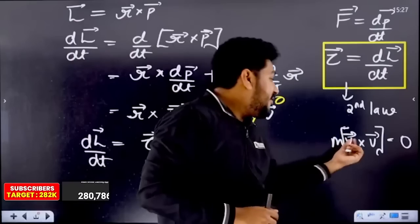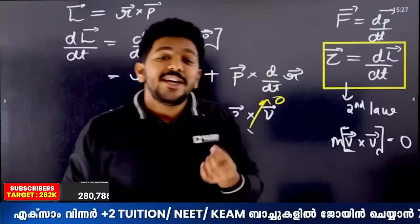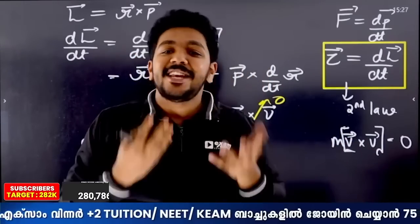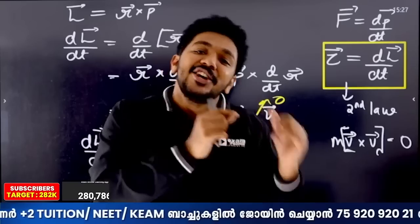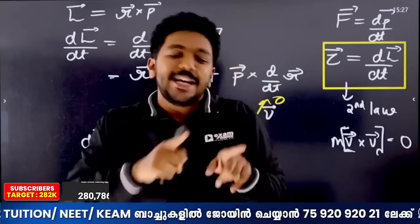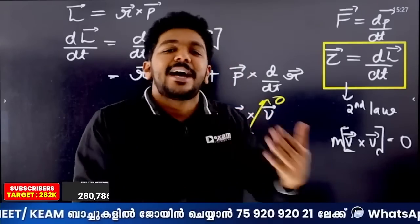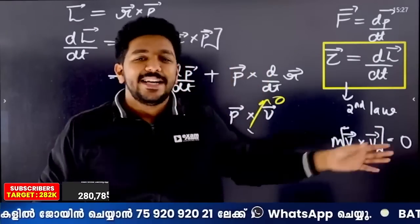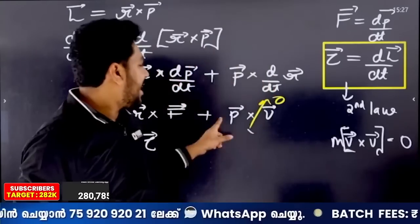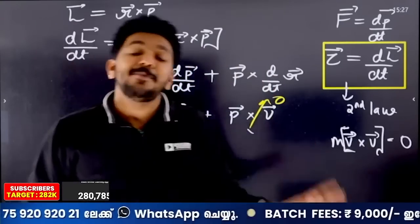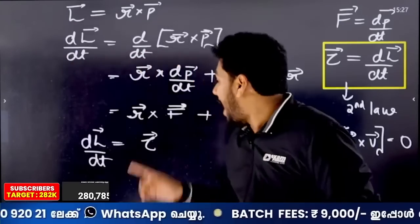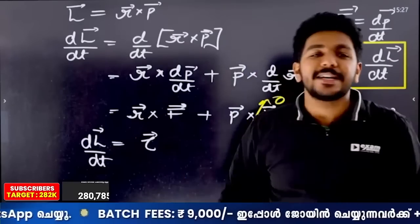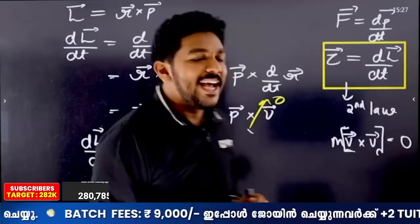Since the same vectors are crossed, their angle is zero, and sin(0) is zero, making that term zero. The first term R cross F is torque. Therefore, torque is equal to dL by dt. This completes the derivation — a simple and important result.